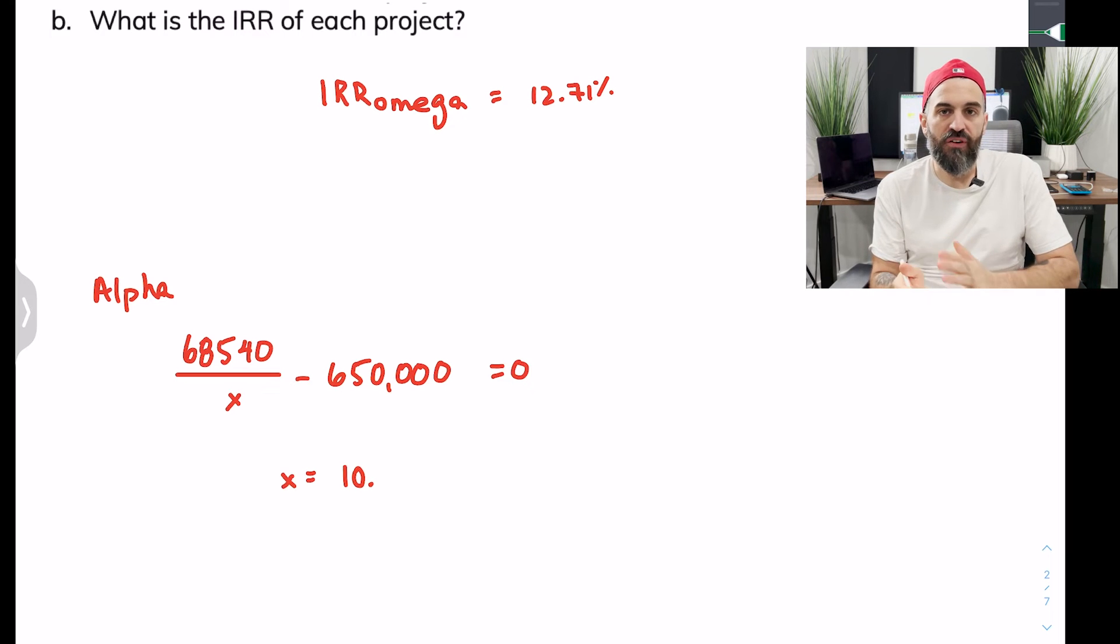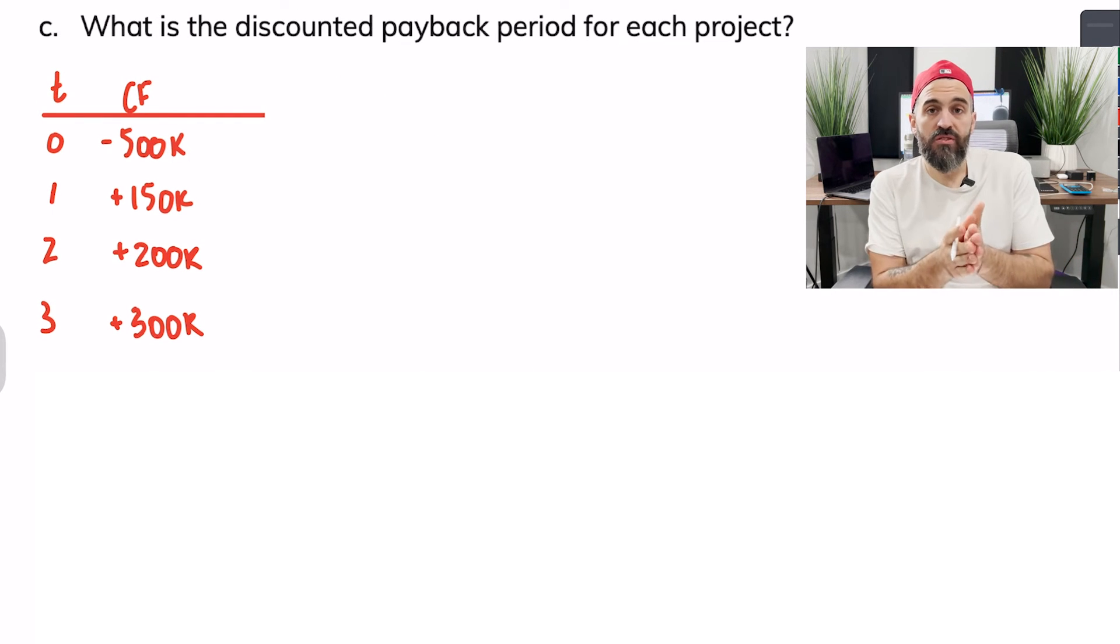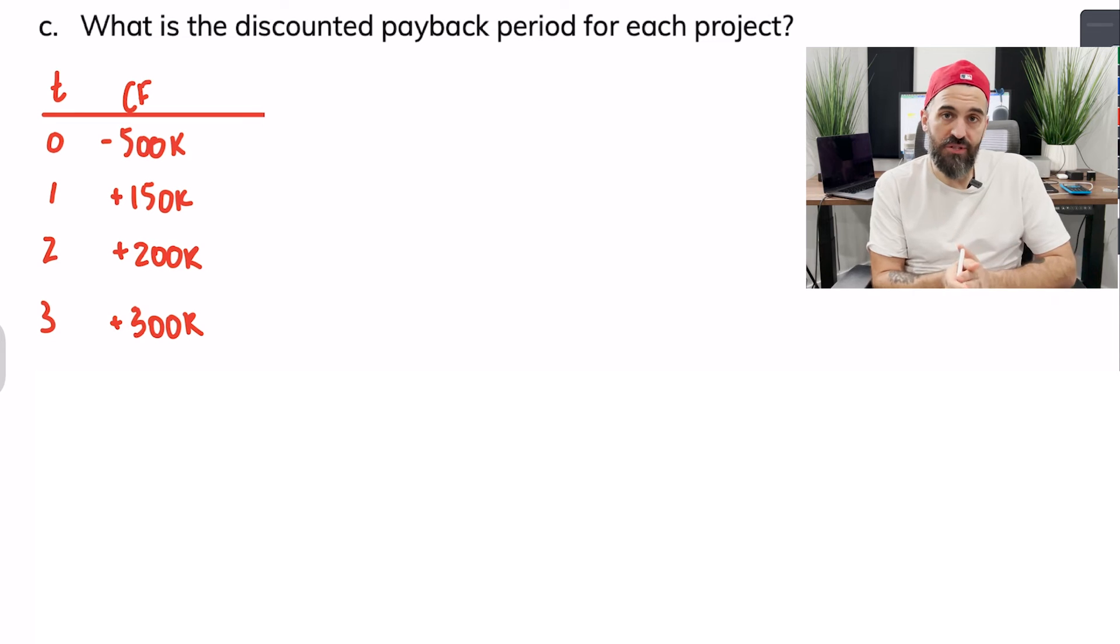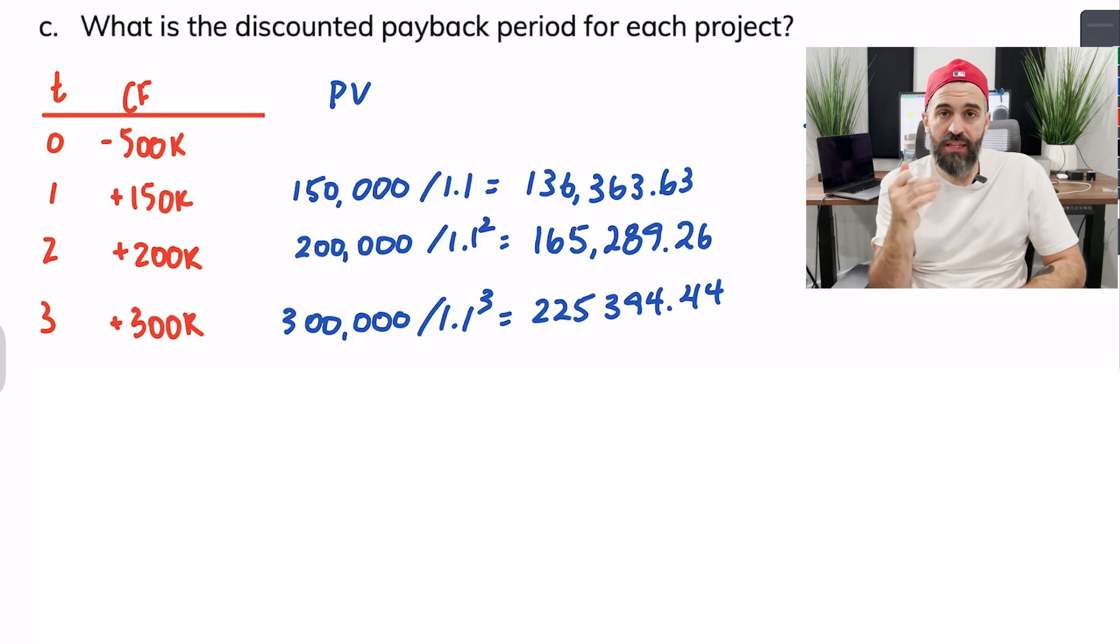For the discounted payback period, for each one of these payments what you'll see me do next is discount each one back the appropriate number of years to bring it back to time zero at a 10% discount rate. Now that I have my discounted values I can add them up and see at what point or how many were needed to get back my initial $500,000.